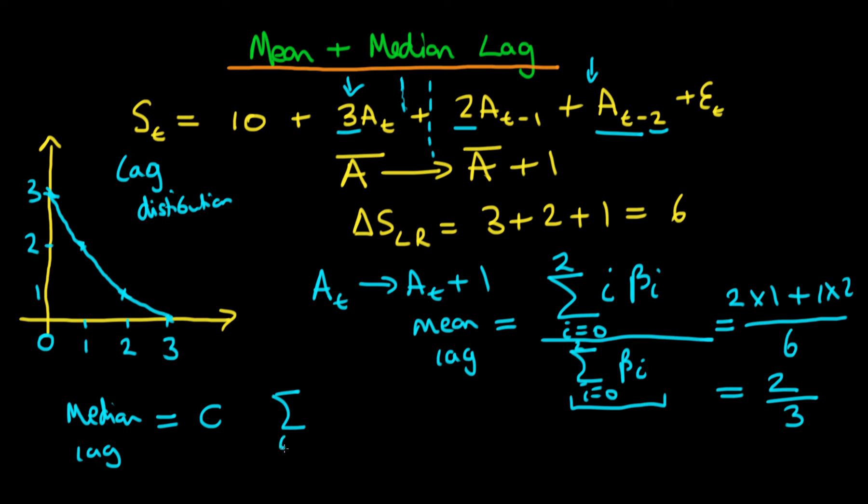So the idea here is that we sum from i equals 0 to c, where c is the thing we're trying to find out, times beta i, and we divide that by the total movement in the dependent variable, which is the sum from i equals 0 to 2 in this case of beta i, and that has to be equal to a half.